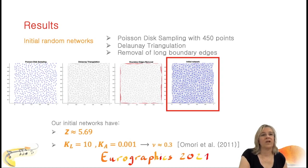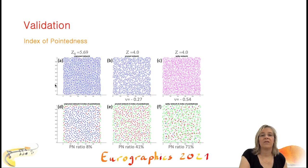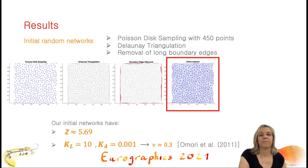We now come to the results. We calculate an initial random network using a Poisson disk sampling and a Delaunay triangulation, which enables to get a regular density. We notice that this way we have a coordination number Z equal to 5.69 for our input networks, regardless of their size. The stiffness parameters of the linear and the angular springs must also be chosen in the simulation. In order to properly calibrate the stiffnesses, we used previous works measuring a Poisson's ratio of about 0.34 for Delaunay networks. Note that our input networks are not auxetic.